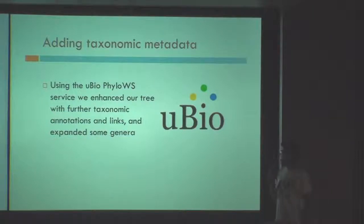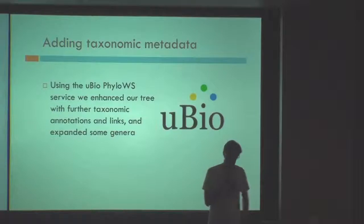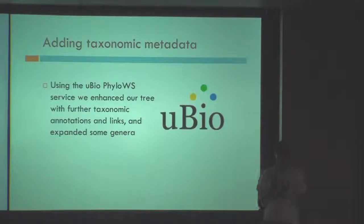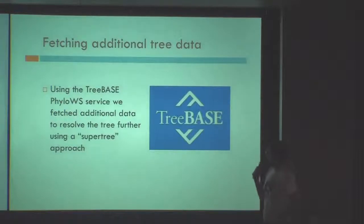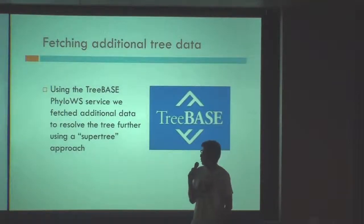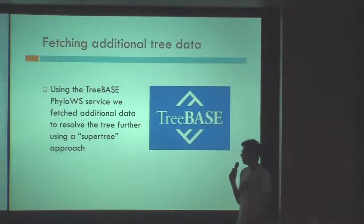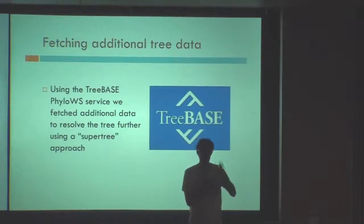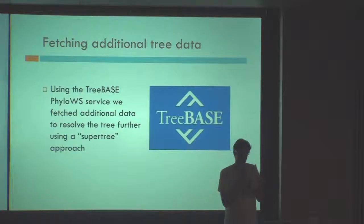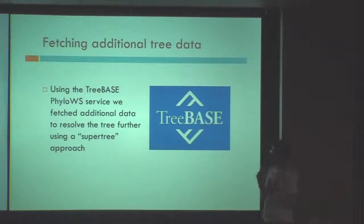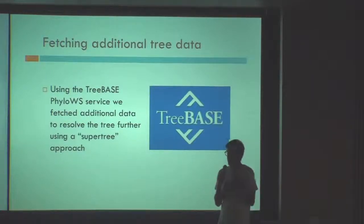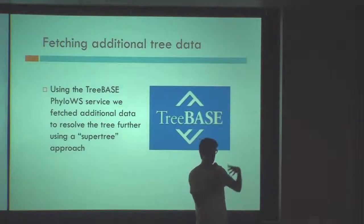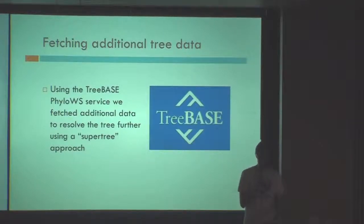We could also use uBio to fetch the species that go into any given genus. Another handy thing was that the data returned by uBio also contains links to other projects that talk about those same species. One of those links was to the TreeBase project, which uses the same sort of URLs, making it easy to write generic clients. We accessed TreeBase to get additional data about the systematics of primates — smaller trees related to, for example, the phylogeny of macaques or other groups. We pulled those in and used the supertree approach, a technique for combining topologies of smaller trees into a larger composite topology, to further resolve our tree.